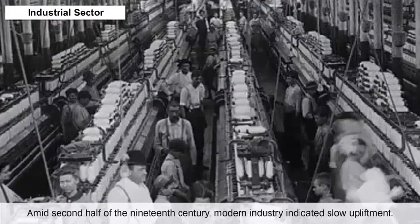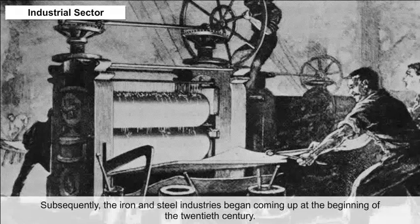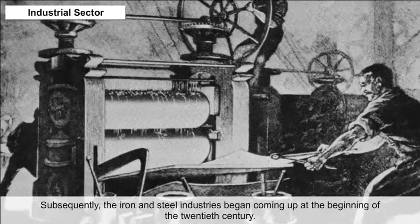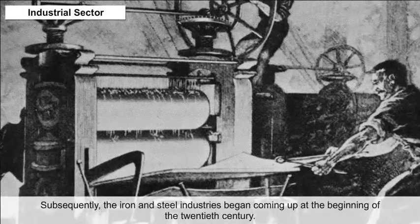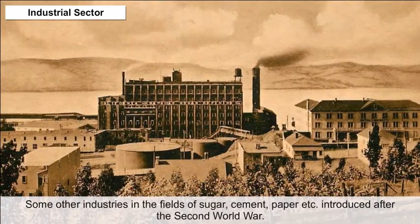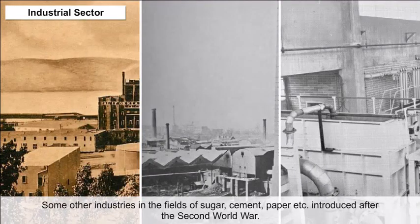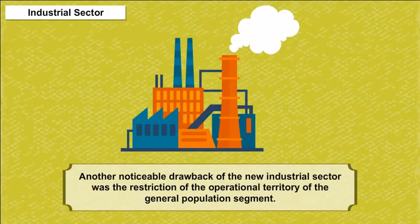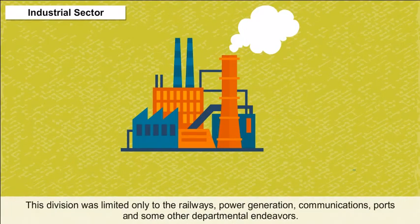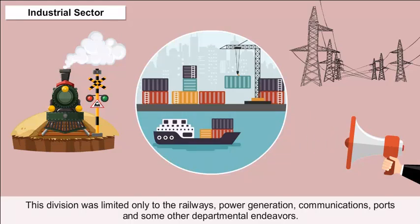During the second half of the 19th century, modern industry showed slow growth. The iron and steel industries began emerging at the beginning of the 20th century. The Tata Iron and Steel Company, TISCO, was set up in 1907. Some other industries in the fields of sugar, cement, and paper were introduced after the Second World War. A noticeable drawback of the new industrial sector was restriction of the public sector, which was limited only to railways, power generation, communications, and similar departmental endeavours.